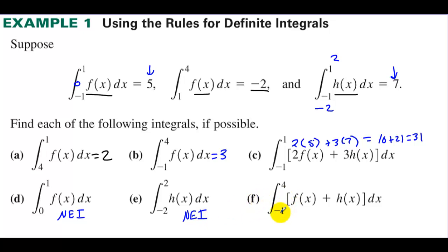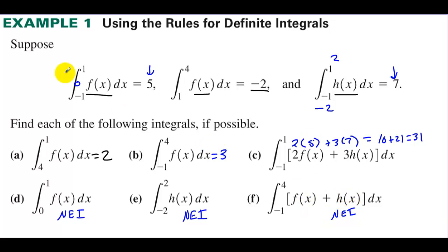Letter F: integrate from negative 1 to 4 of f(x) plus h(x). Well, we don't know anything about the integral from negative 1 to 4 of h(x), so this one doesn't have enough information either.